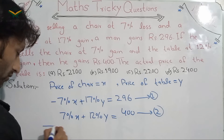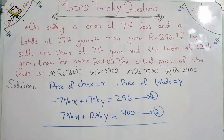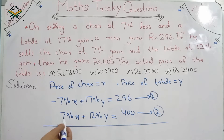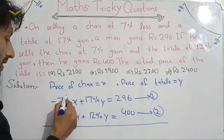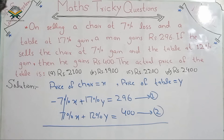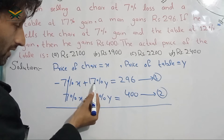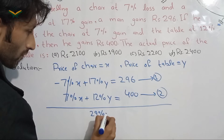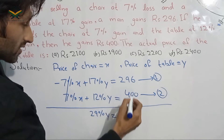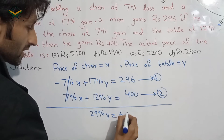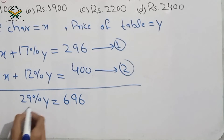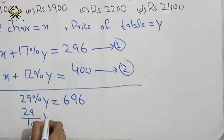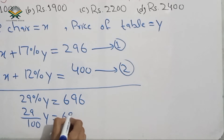We can add both equations because here we have minus 7x and here we have plus 7x, so they cancel. Adding 17% and 12% gives 29%. So 29% of y equals 296 plus 400, which is 696. Therefore 29y divided by 100 equals 696.